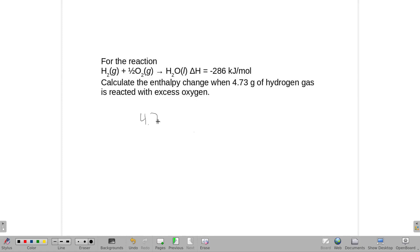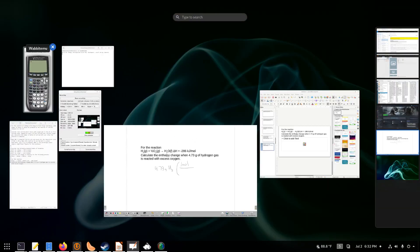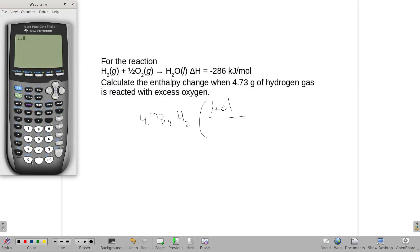All right, so I'm going to take that 4.73 grams of hydrogen, and first thing I'm going to do is turn it into moles, use the molecular weight of hydrogen, and that is 1.008 times 2.